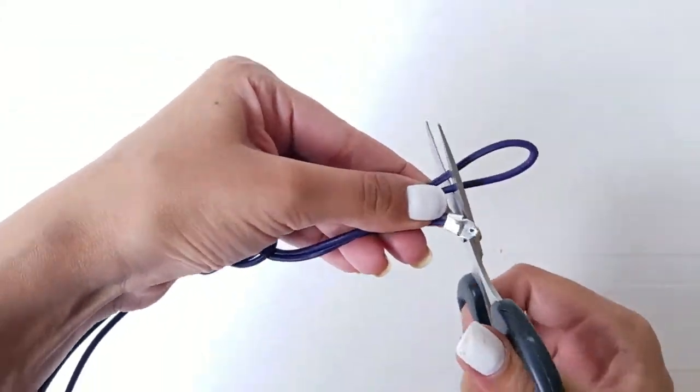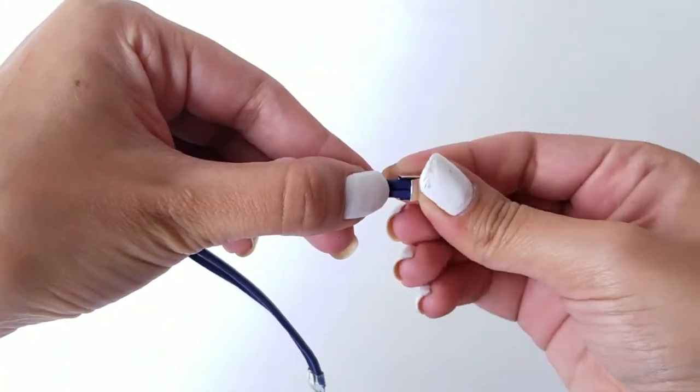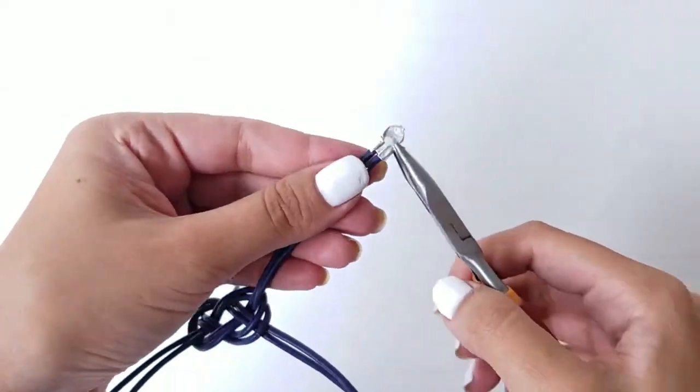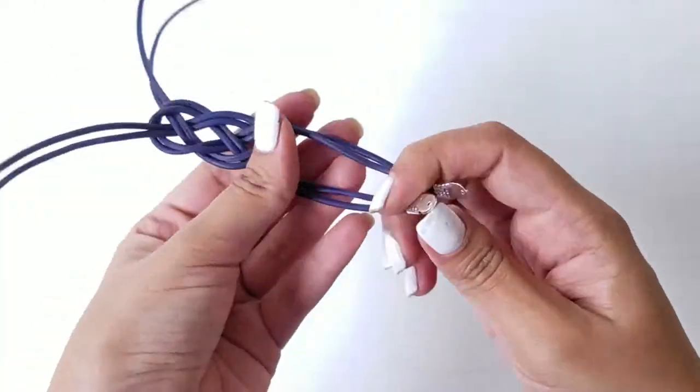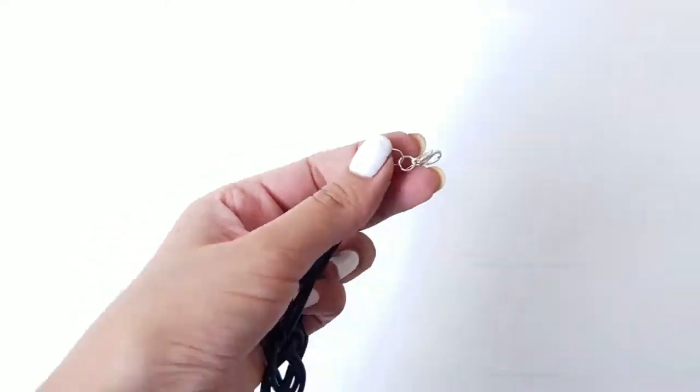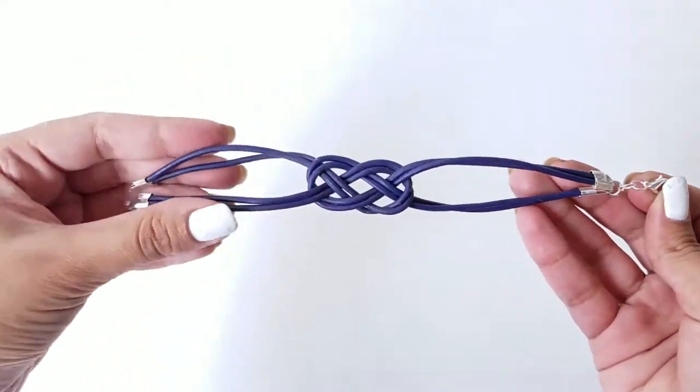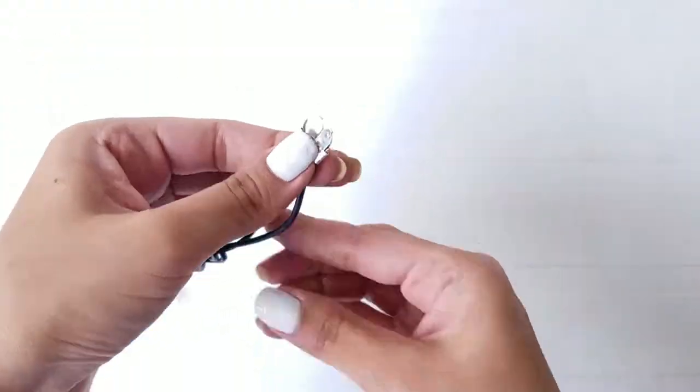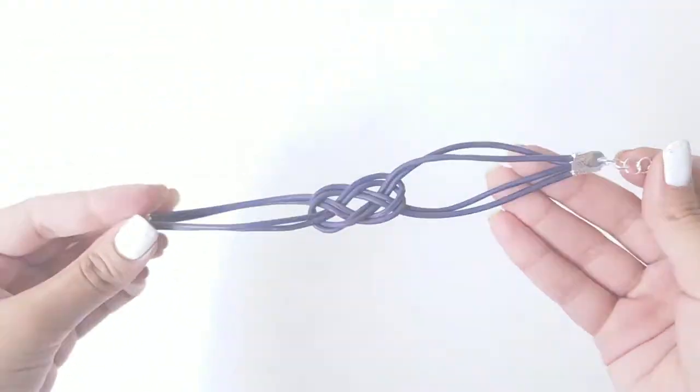Measure the size of your wrist and cut the strings. Fasten a jewelry clamp on all four of the strings and attach a jump ring and a hook to secure it in place. You're all set to rock this celtic knot bracelet.